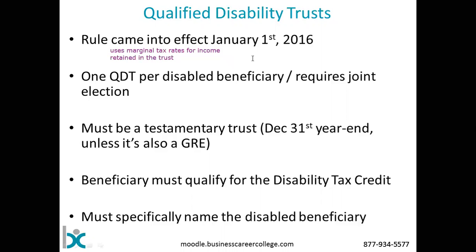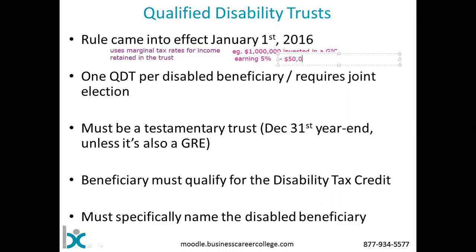Just a quick review: if you have, for example, a million dollars invested in a GIC and you're earning 5% on that — which is a little high for GICs in late 2016 — you've got $50,000 of income. If this is any testamentary trust other than a QDT or a graduated rate estate (GRE) trust, then that would all be taxed at 29% federal plus your provincial tax rate.